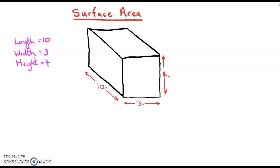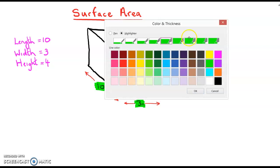In this video we're going to work out the surface area of a rectangular block of width 3, height 4, and length 10 meters. We start by taking each individual section at a time.